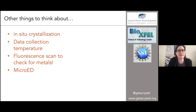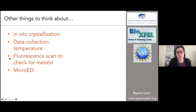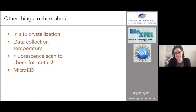A couple of other quick things to think about: if you have crystals that are really fragile and difficult to handle, consider in situ crystallization, where you crystallize directly on a platform that can then be cryo-protected or used to collect data at room temperature without harvesting the samples. I encourage anyone doing crystallography and collecting synchrotron data to do a fluorescent scan to check for metals in your sample — you'd be surprised at the number of metalloproteins. MicroED is also something we're working to develop, using SHG to see very small crystals and move them to a cryo-EM grid to collect microED data.